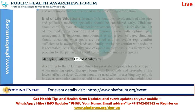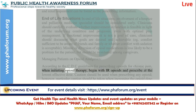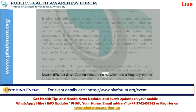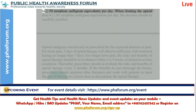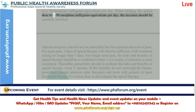Managing patients on opioid analgesics: according to the CDC guidelines for prescribing opioids for chronic pain, when initiating opioid therapy, begin with IR opioids and prescribe at the lowest effective dose. Particular caution should be taken when increasing the opioid dose to greater than or equal to 50 morphine milligram equivalents per day. When titrating the dose to greater than or equal to 90 morphine milligram equivalents per day, the decision should be carefully justified.